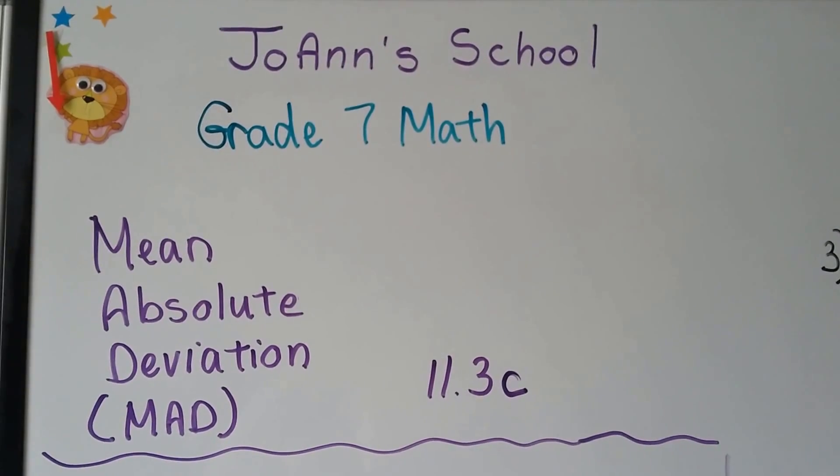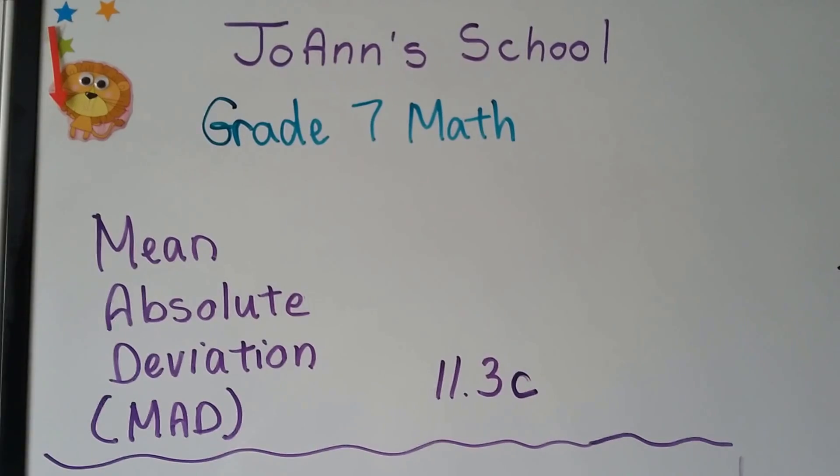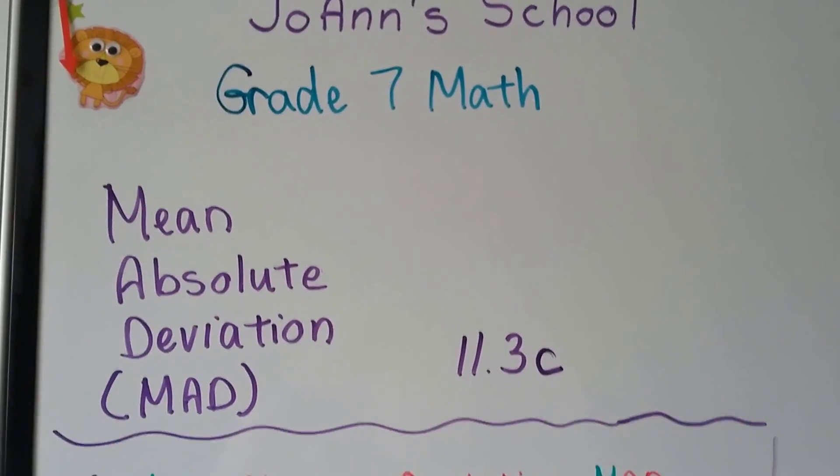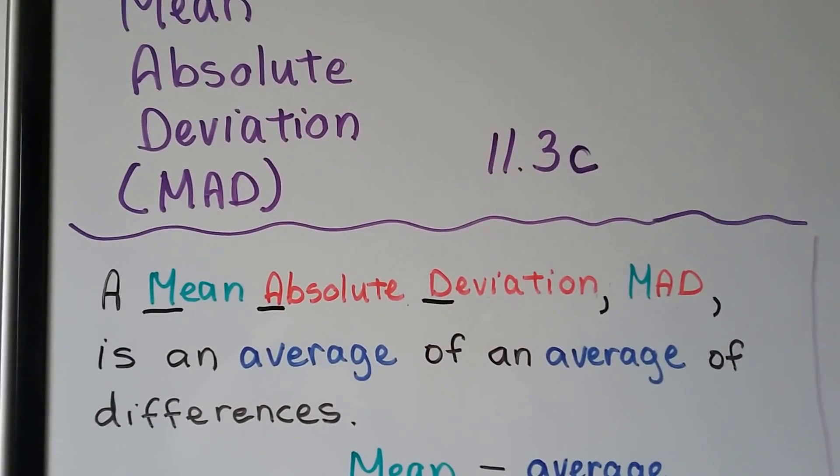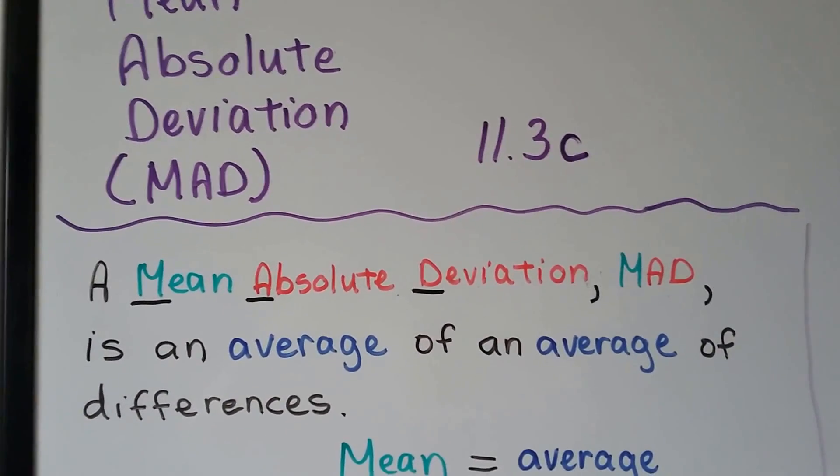Grade 7 Math, Mean Absolute Deviation, MAD, Lesson 11.3C. A mean absolute deviation, or MAD, is an average of an average of differences.